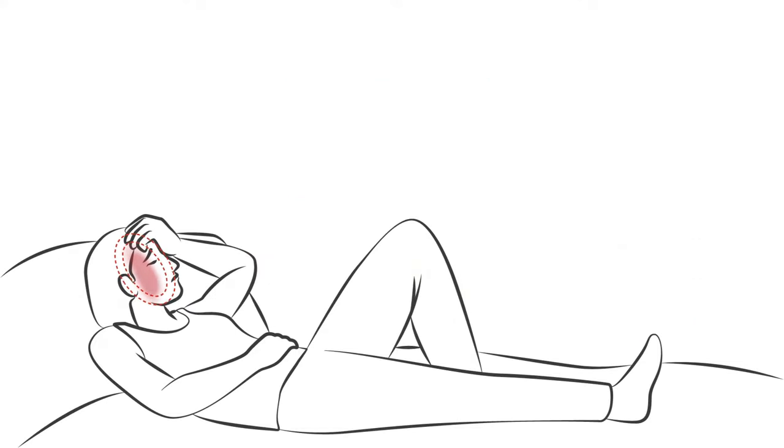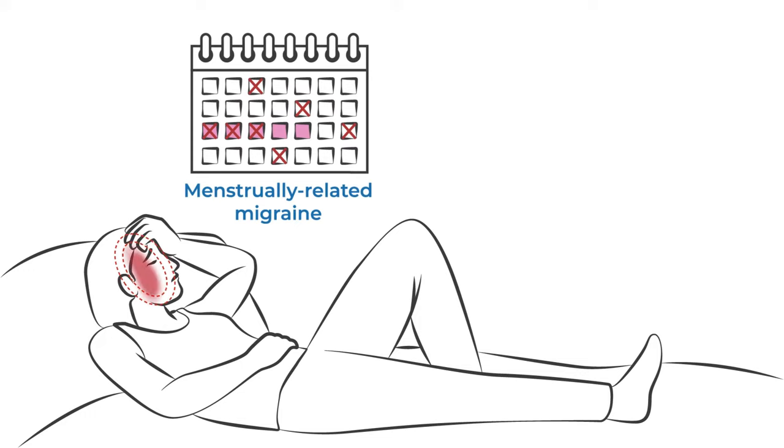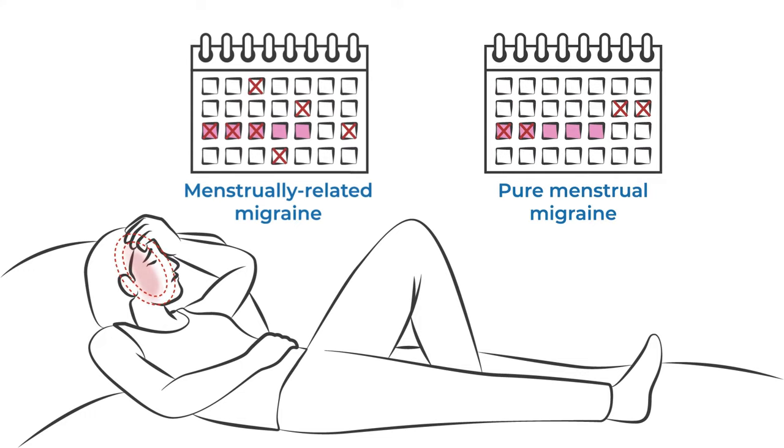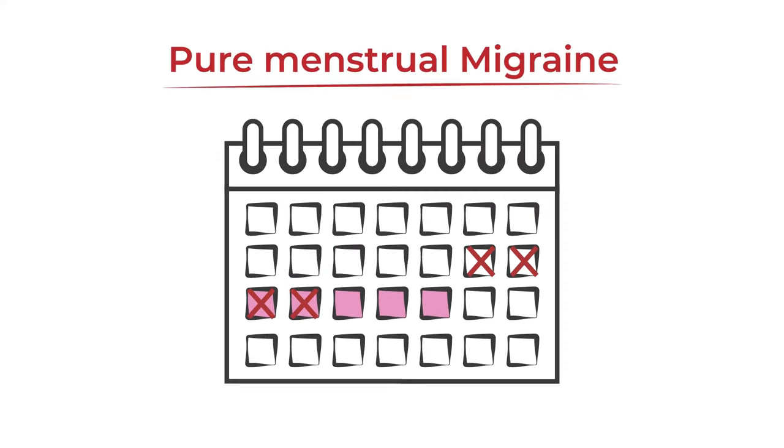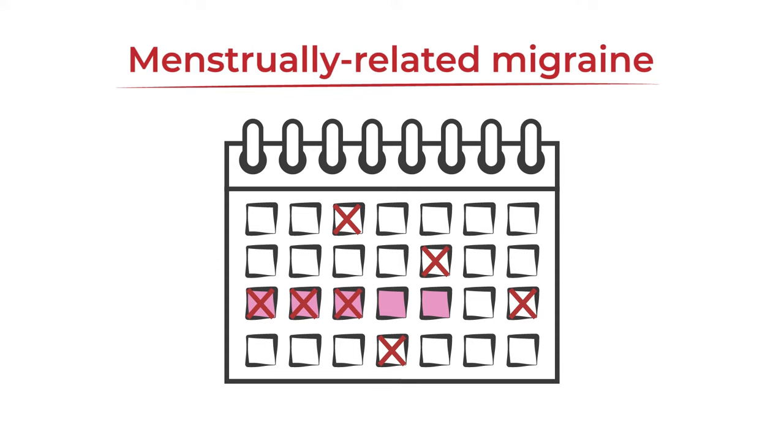There are two subtypes of menstrual migraine: menstrually related migraine and pure menstrual migraine. Pure menstrual migraine occurs only one or two days before or after the onset of your period, while menstrually related migraine occurs one to two days before or after the onset of your period and at other times in your cycle.